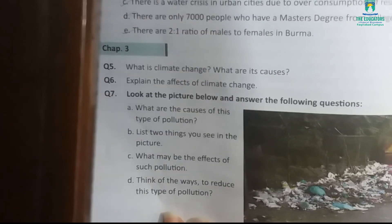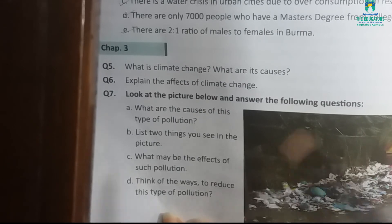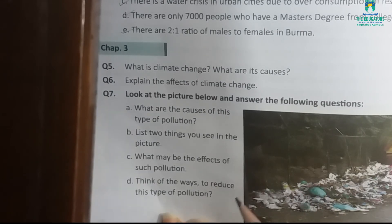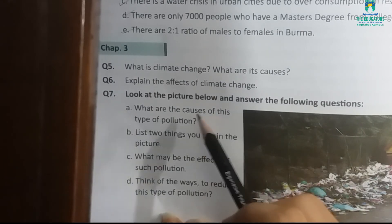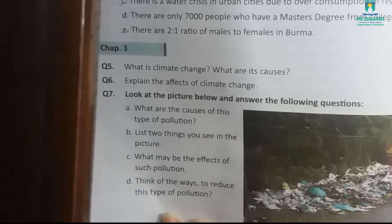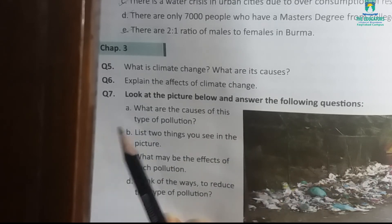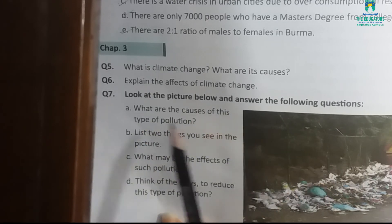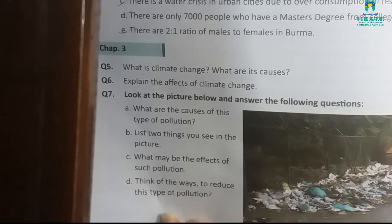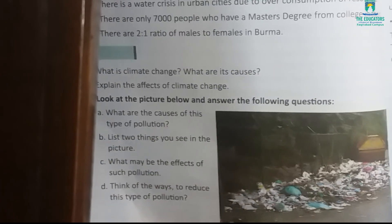Look at this picture. Question number seven is your homework. Look at the picture below and answer the following questions. Question number one is: what are the causes of this type of pollution? As you can see, this is land pollution.